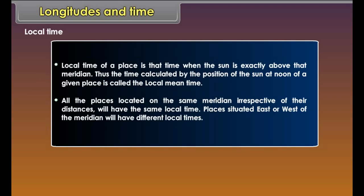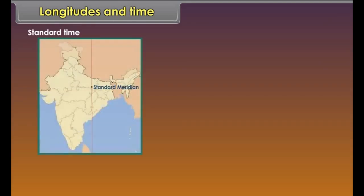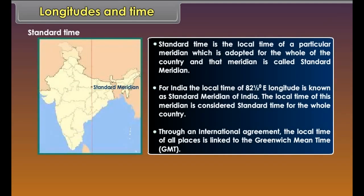This means each place has a different time of sunrise and sunset. The earth moves from west to east. That is why the time will be ahead of Greenwich in the east and behind Greenwich in the west. Local time of a place is that time when the sun is exactly above that meridian. The time calculated by the position of the sun at noon of a given place is called the local mean time.